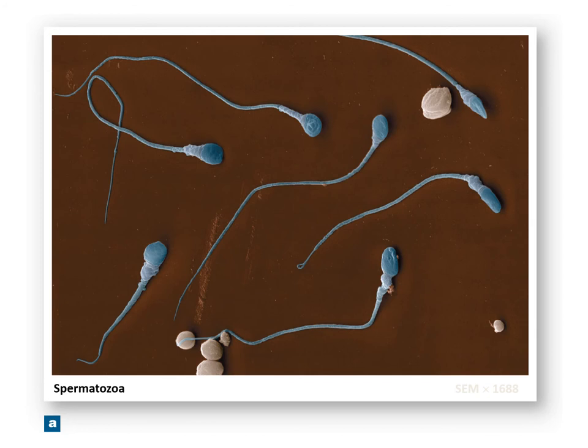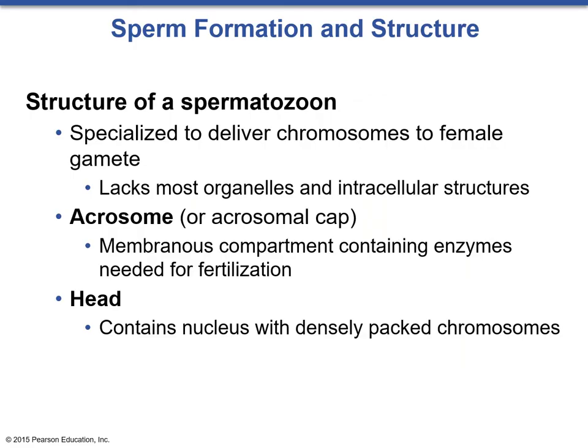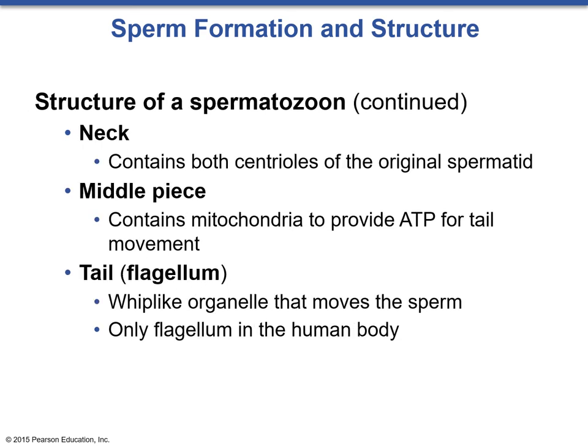Let's look at the structure of the spermatozoa. It is entirely designed to deliver chromosomes to the female gamete, so it lacks most organelles and other intracellular structures. It consists of an acrosome — a membrane cap at the very top containing enzymes needed for fertilization that help it break through the ovum. The head contains the nucleus packed with 23 chromosomes. The neck contains centrioles and any remaining organelles, which connects to the middle piece — entirely mitochondria, functioning as the motor. The tail or flagellum is the propeller, and it is the only flagellum found in the human body.